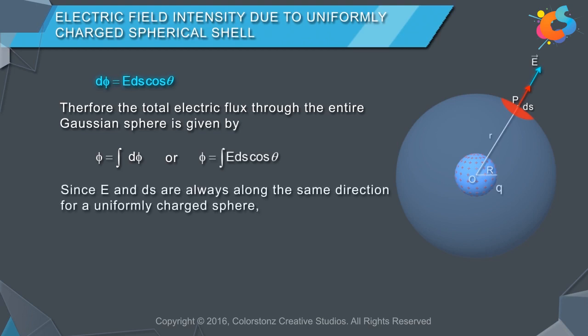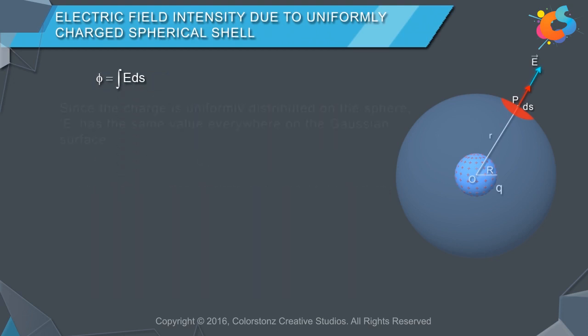Since E and ds are always along the same direction for a uniformly charged sphere, θ = 0. Therefore, φ = ∫E ds. Since the charge is uniformly distributed on the sphere, E has the same value everywhere on the Gaussian surface.